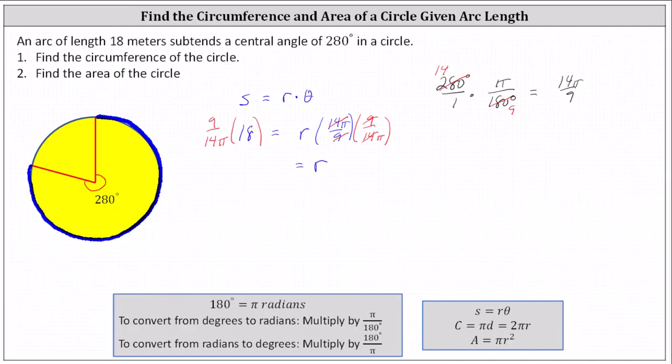18 as a fraction with the denominator of one. Notice 14 and 18 share a common factor of two. There are seven twos in 14, nine twos in 18. We have R equals 81 divided by seven pi.